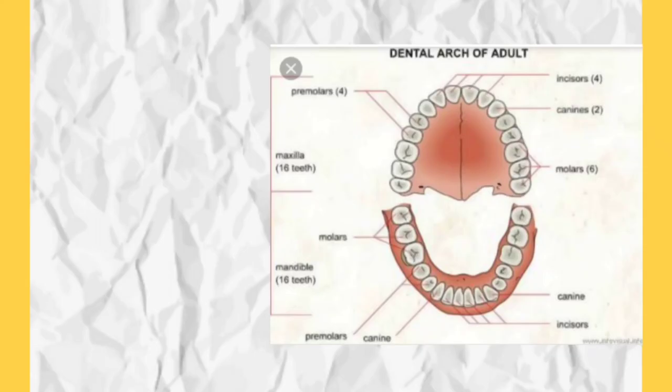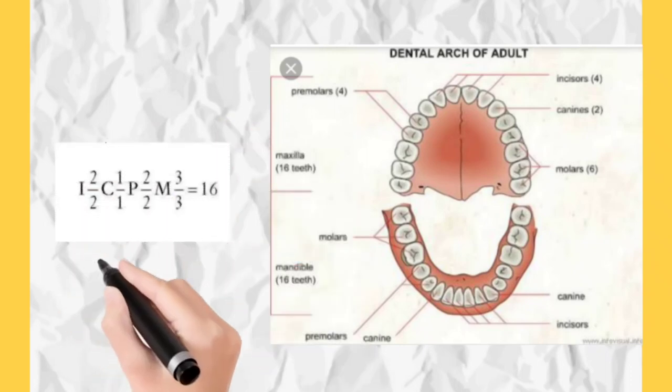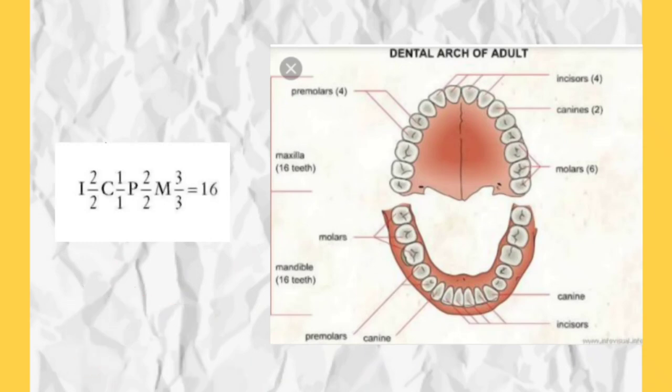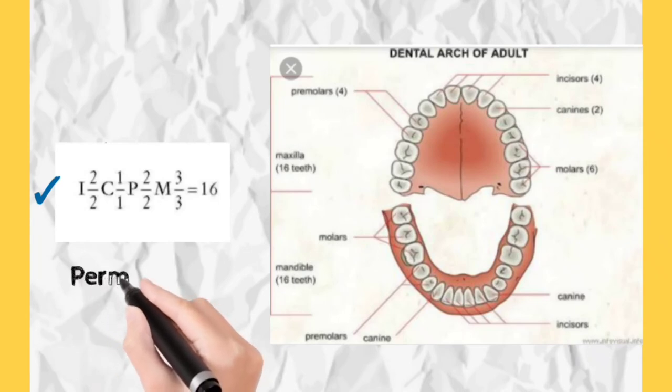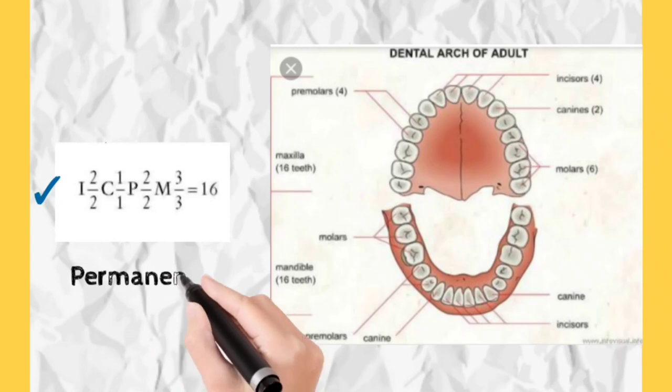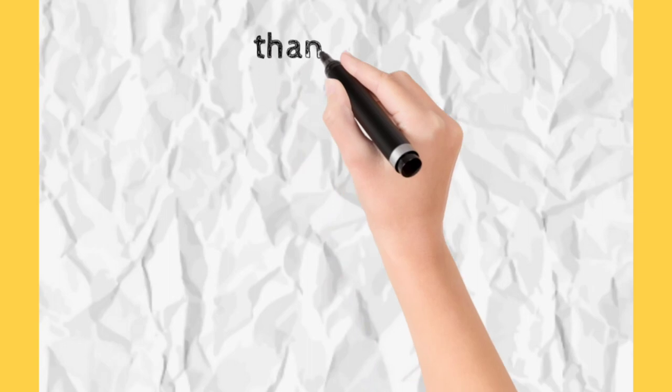For adults, the permanent dental formula is: 2 incisors maxillary and 2 incisors in the mandibular half arch - remember half arch, complete arch would be double. Then 1 canine maxillary half arch, 1 canine mandibular half arch, 2 premolars maxillary half arch, 2 premolars mandibular half arch, 3 molars maxillary and 3 molars mandibular half arch. That means 32 teeth in both the arches.